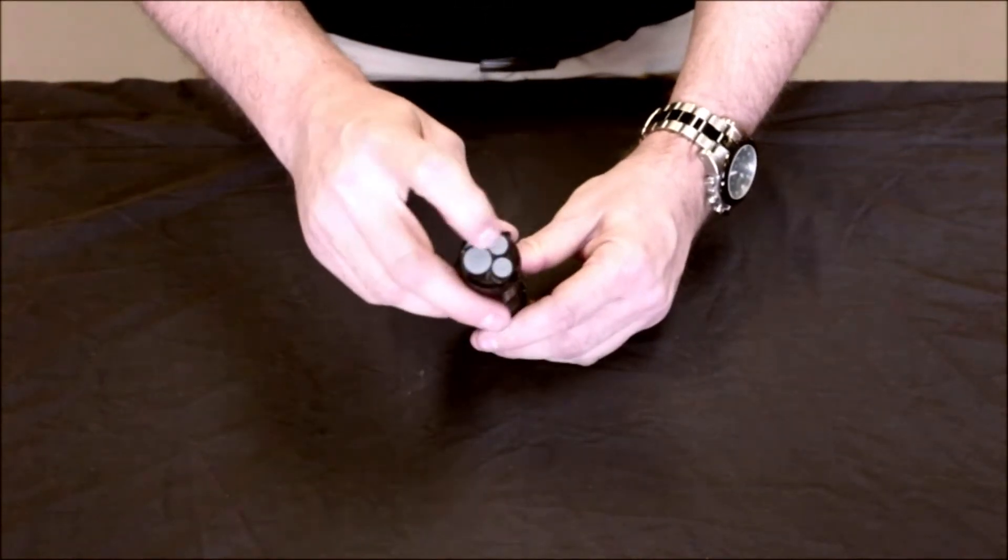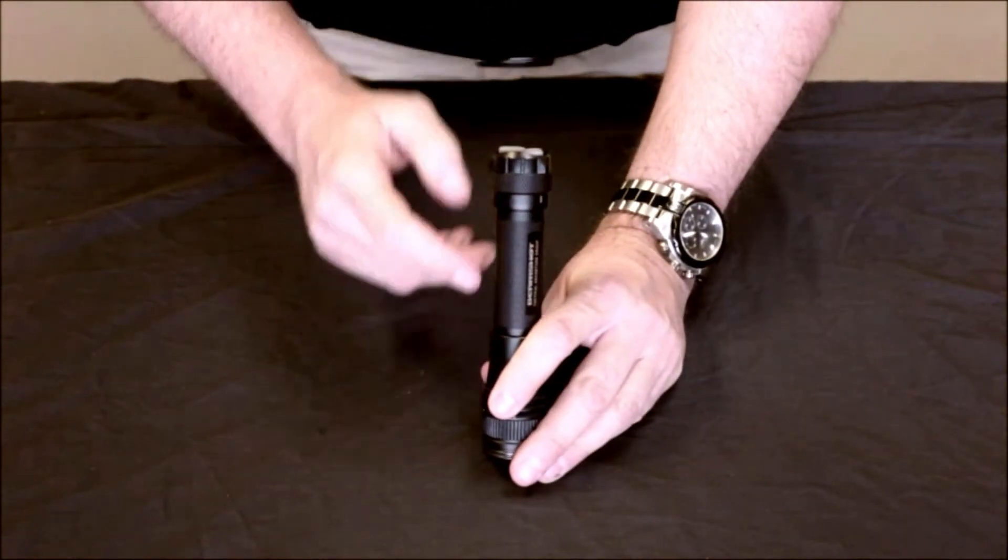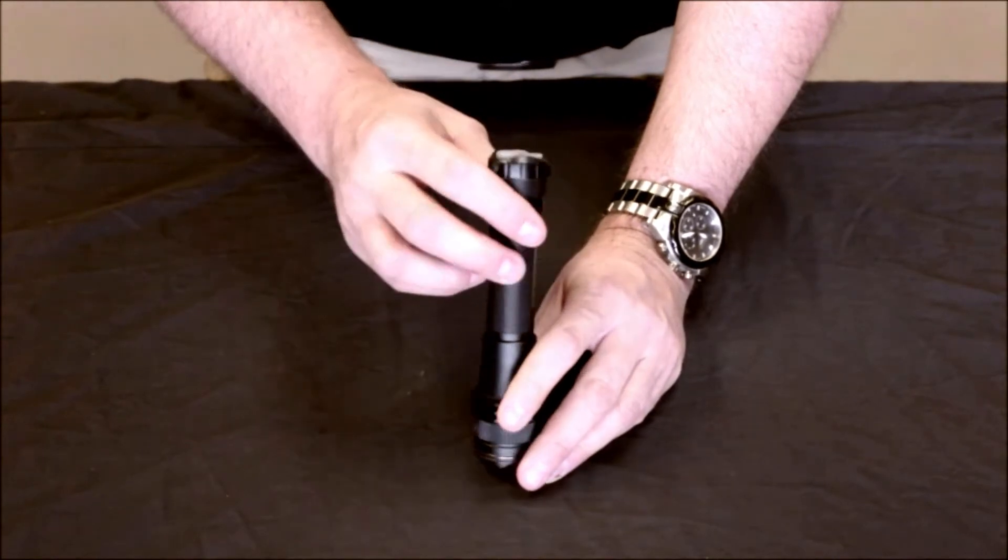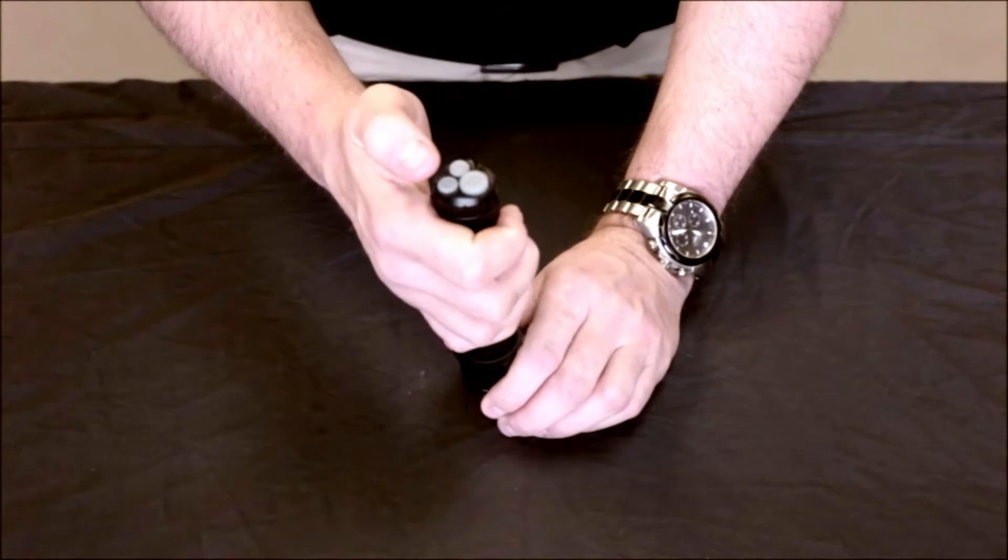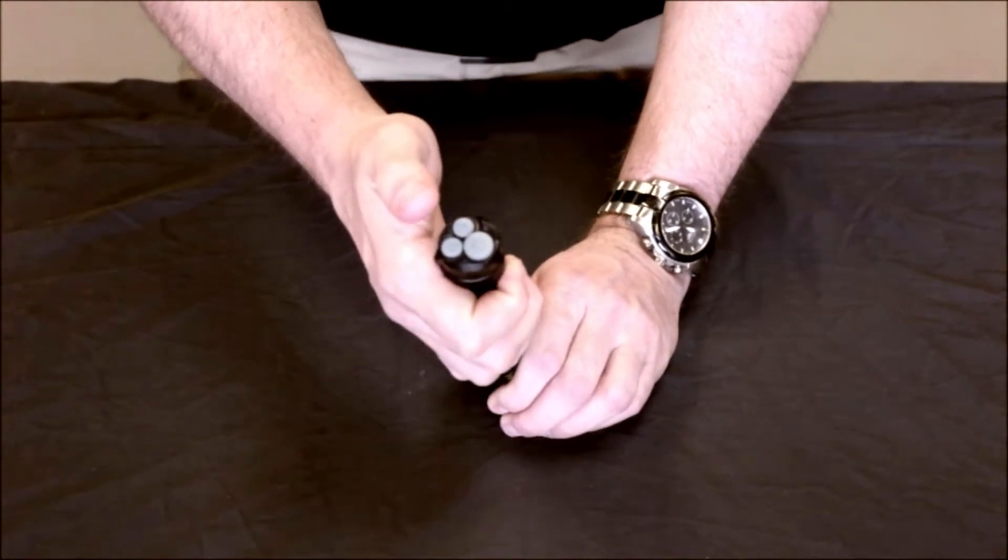As we look to the rear of the flashlight we have three control buttons. The unique thing about this is each control button is at a different level. This gives you the ability to just feel which button you want to use. It is more of an intuitive function of the flashlight.